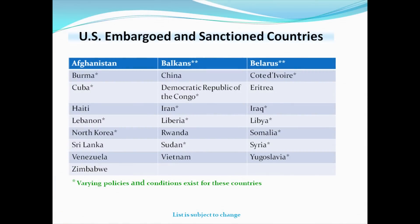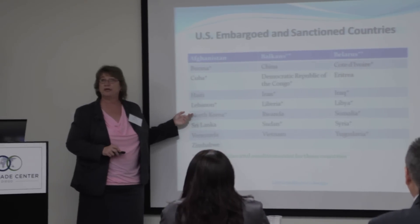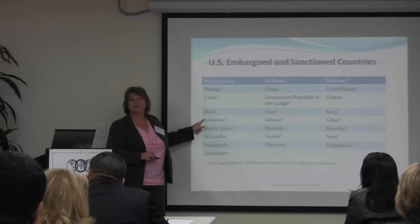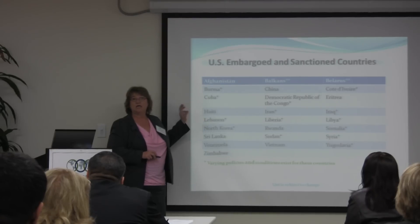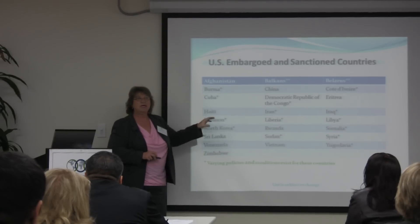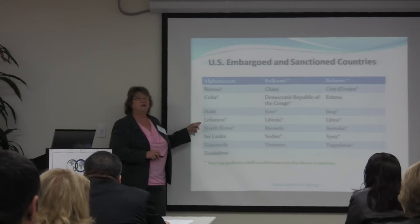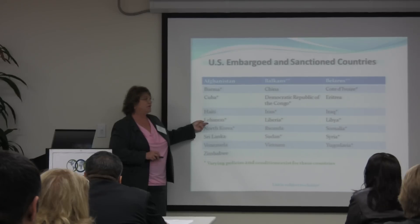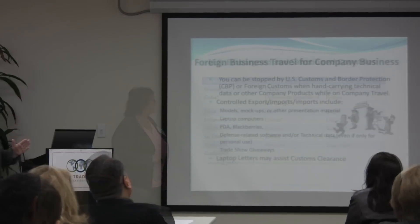I combined the list of embargoed and sanctioned countries so you can see where they are. They have varying policies — there's an asterisk. For example, you can get medical supplies into North Korea. You can send stuff to Lebanon, to a company in Lebanon, but if they're on the denied party screening list, you can't send to them.